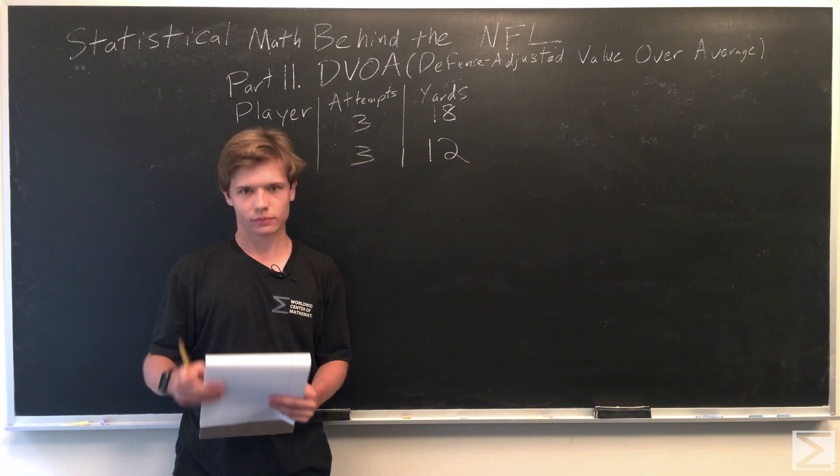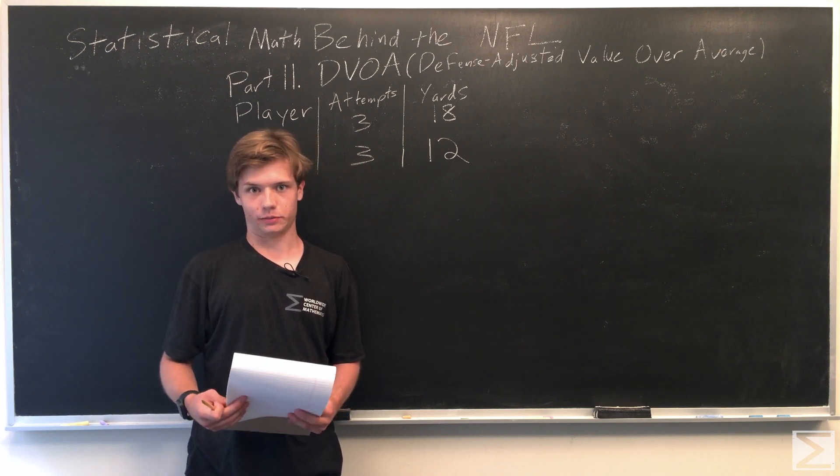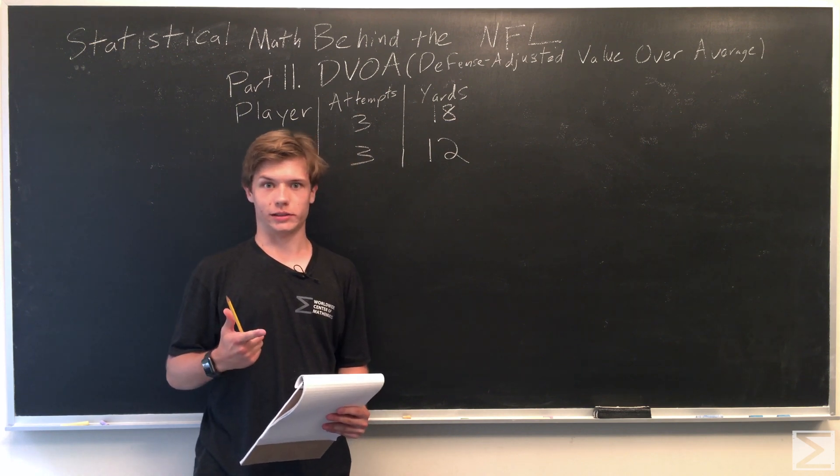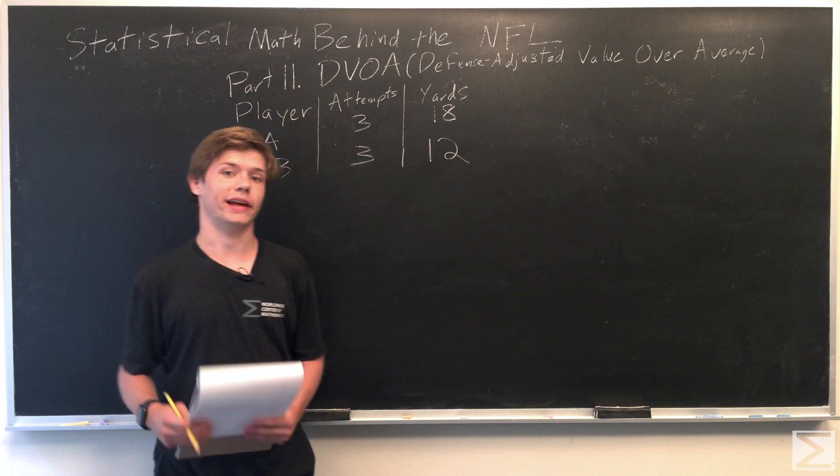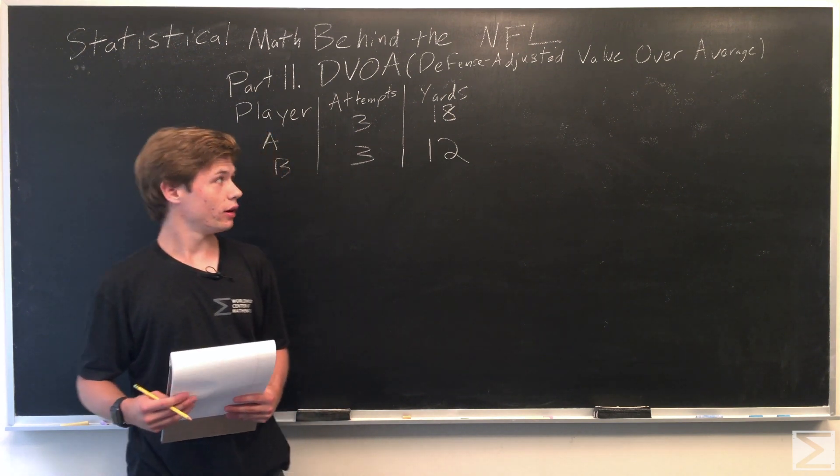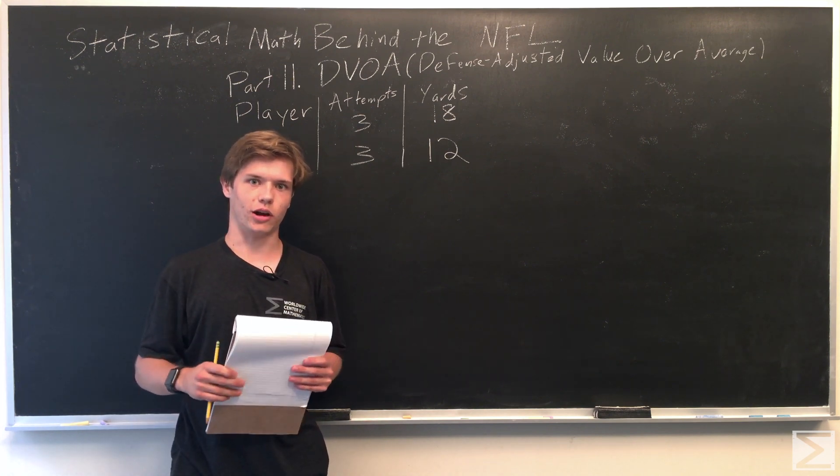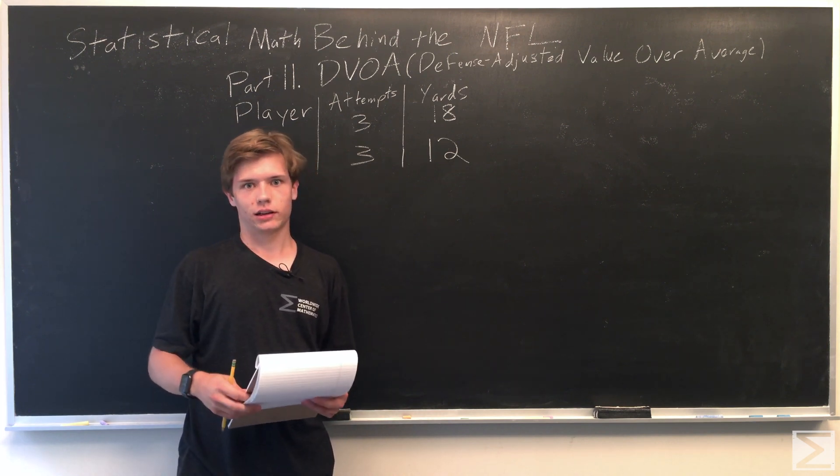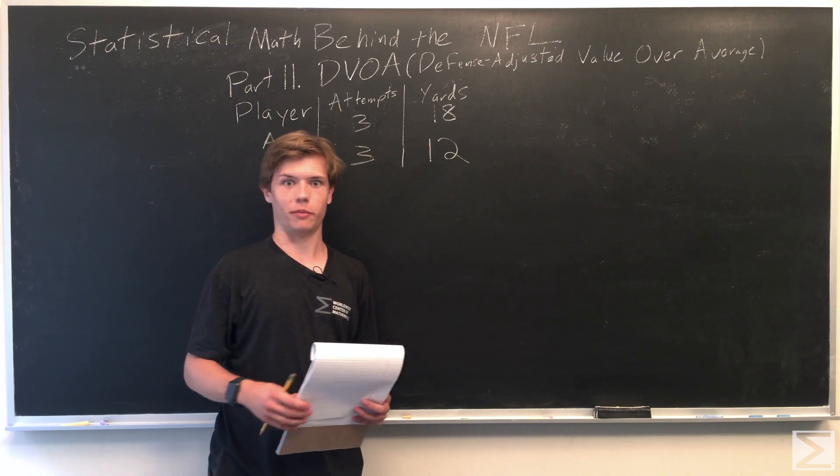So in football, you have four downs to get 10 yards. So two of the most important things you can do are to score points or to get more first downs. And so DVOA is a stat that takes these things into account when figuring out which players are better. So it goes a little bit beyond the raw total. The way it's done is that it looks at unique situations and then assigns a success point if these criteria are met.